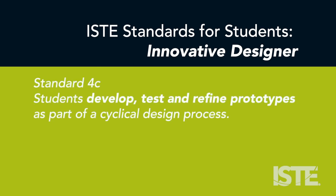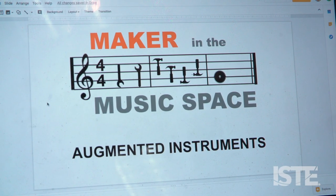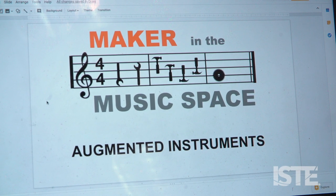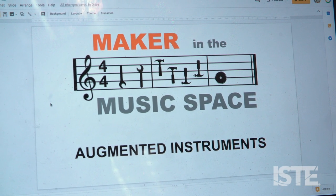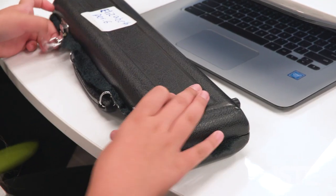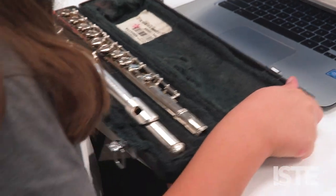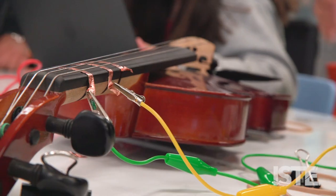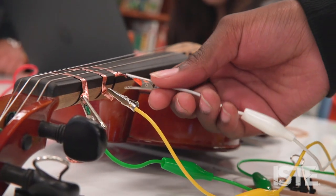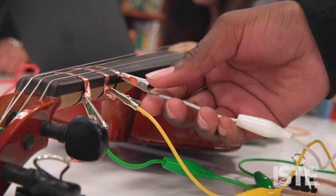Students develop, test, and refine prototypes as part of a cyclical design process. Today, my orchestra kids and advanced band kids will be using their traditional acoustic instruments, and they're going to be trying to augment them with a digital interface.